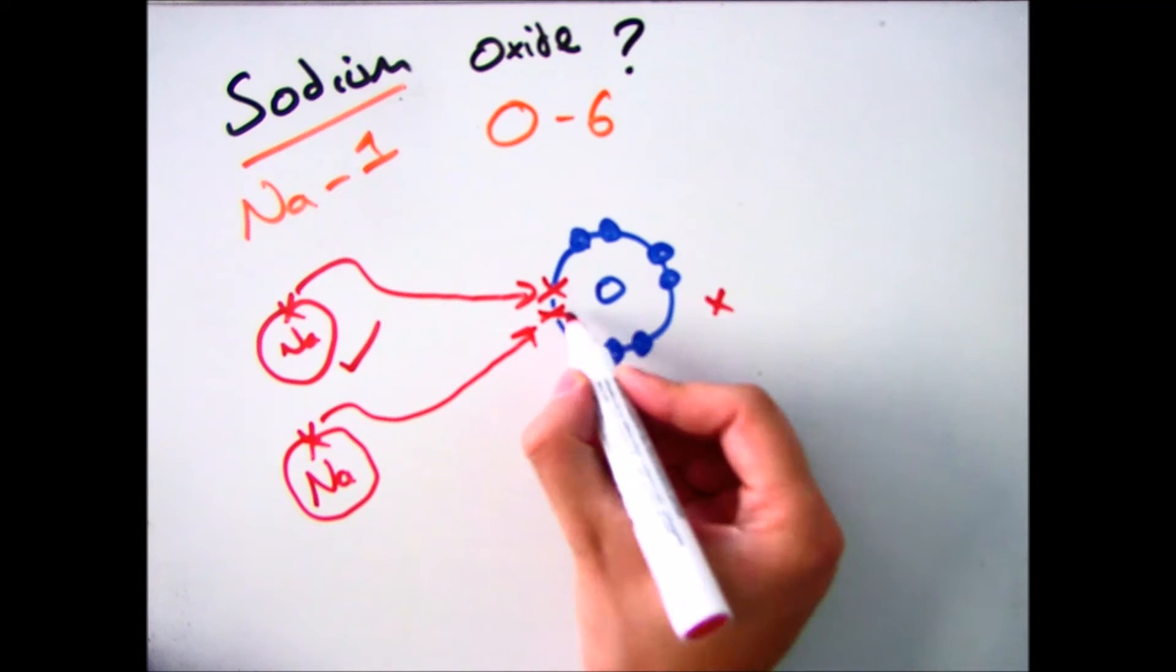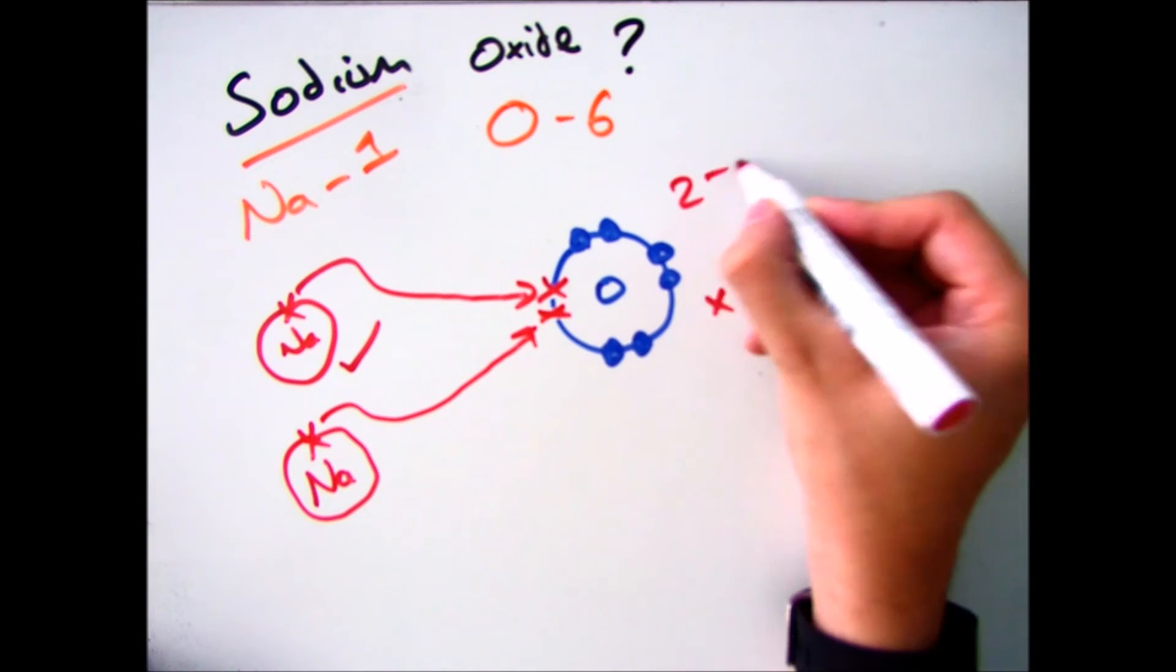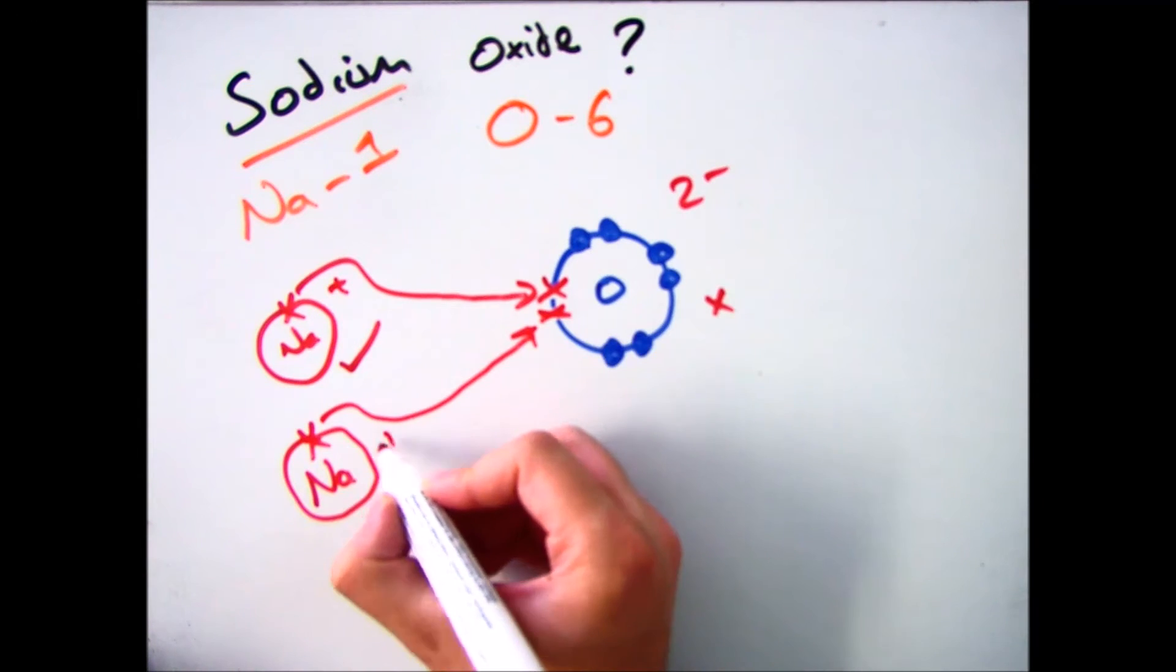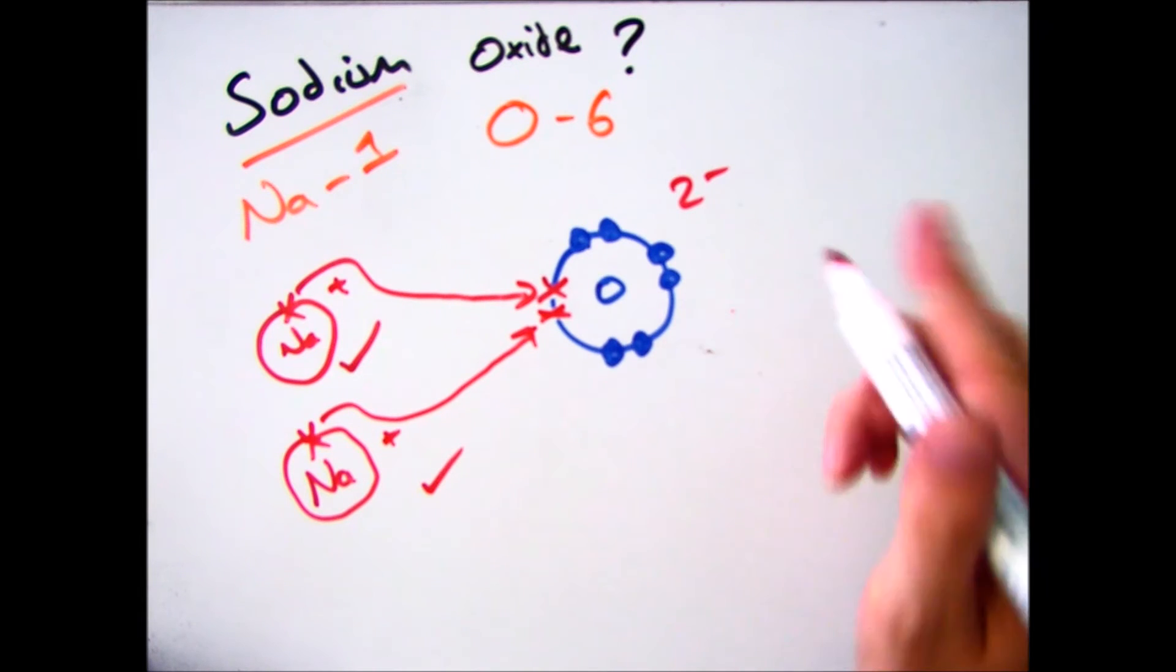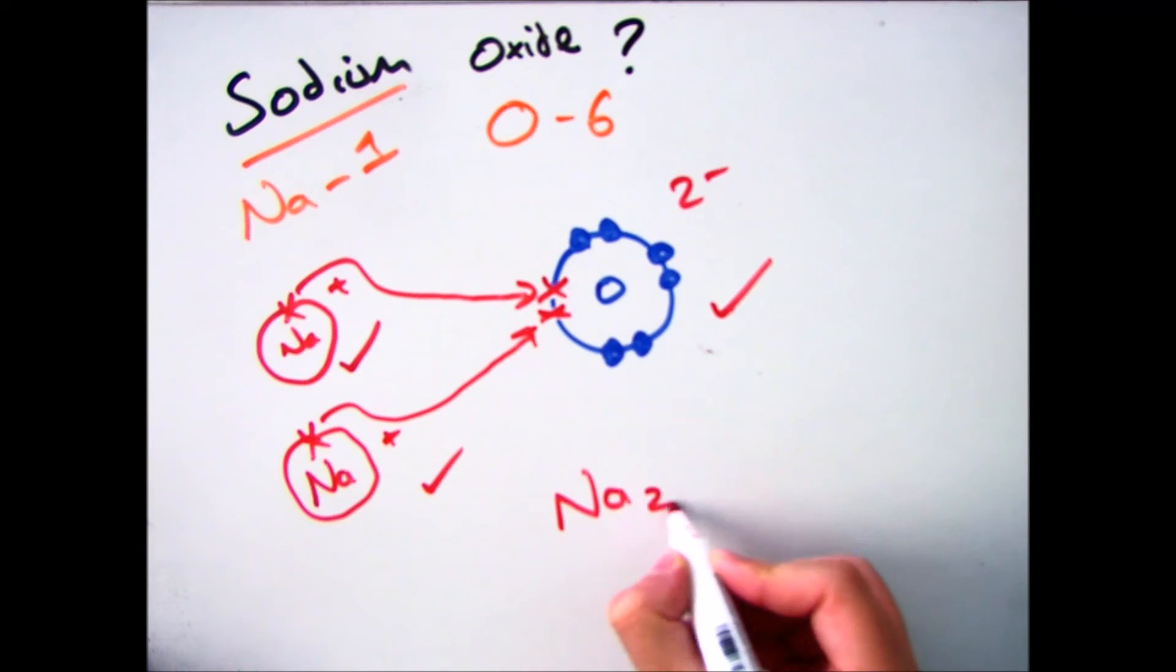Which will give us oxygen, which has gained two electrons to become O2-, and then our two sodiums, which have lost an electron, to become positive. Which gives us the formula of Na2O.